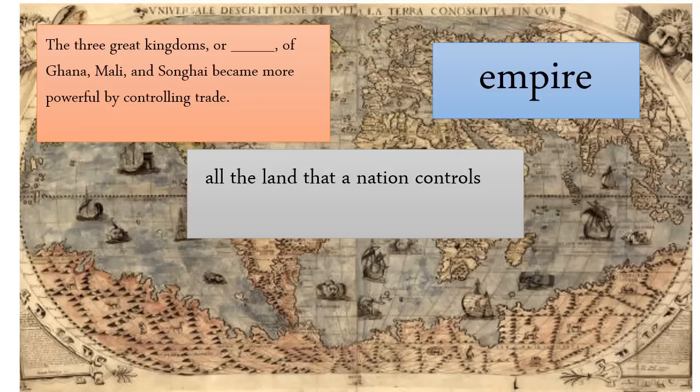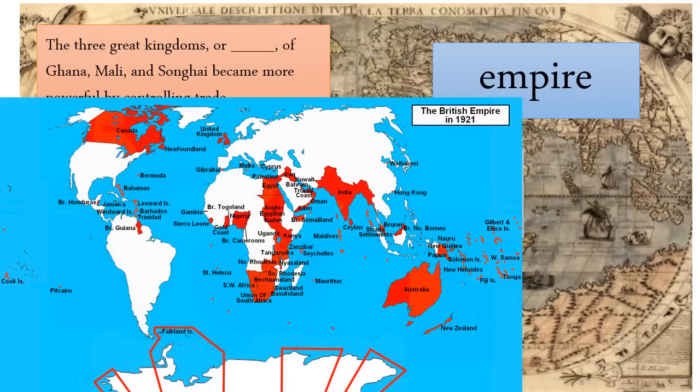When I think of the word empire, I think of the greatest empire in all the world. And that would be the British empire. In 1921, the world map looked like this. And every red country was controlled by the British empire.